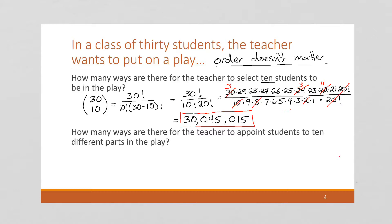And because the order doesn't matter, this is actually going to be a much smaller number than if the order did matter, because we're dividing out by 10 factorial. So it'll be 10 factorial bigger if the order matters. So that's this question down here. How many ways are there for a teacher to appoint students to 10 different parts in a play? Order matters there. Order doesn't matter in this problem. Here the order does matter.